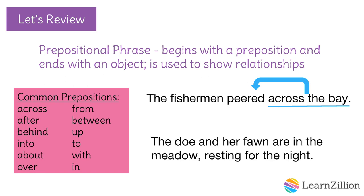Here's another example: "The doe and her fawn are in the meadow, resting for the night." This time, our prepositional phrase, "in the meadow," is describing where the deer are physically located. So it's acting as an adjective describing the deer.